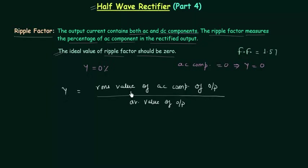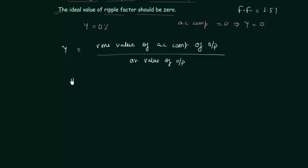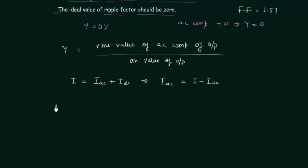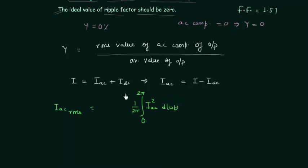First I will calculate the RMS value of AC component of output, then we will divide it by the average value of output. The total output current I is equal to IAC plus IDC — AC component plus DC component — which implies IAC is equal to I minus IDC. The RMS value of AC component, IAC_RMS, is equal to the square root of the mean of IAC squared, integrating from 0 to 2π with respect to d(ωt), divided by 2π.